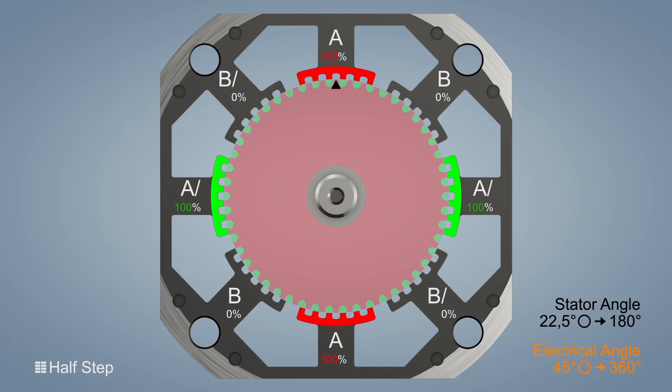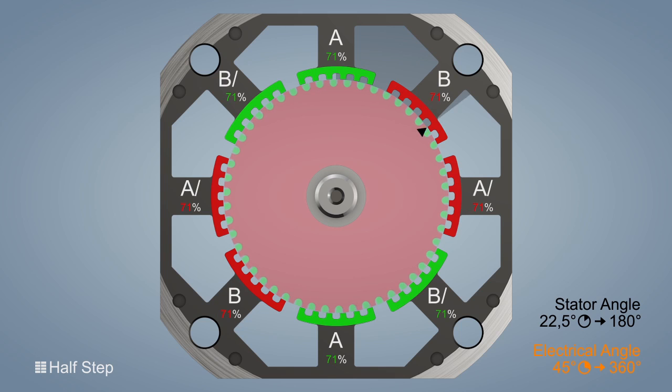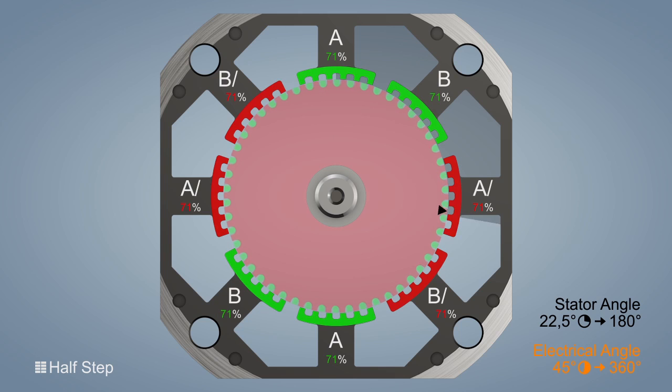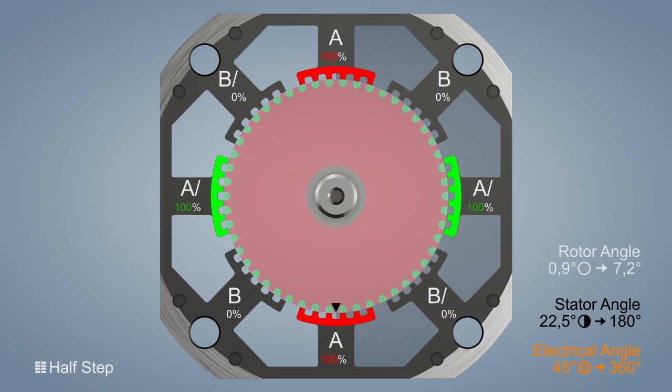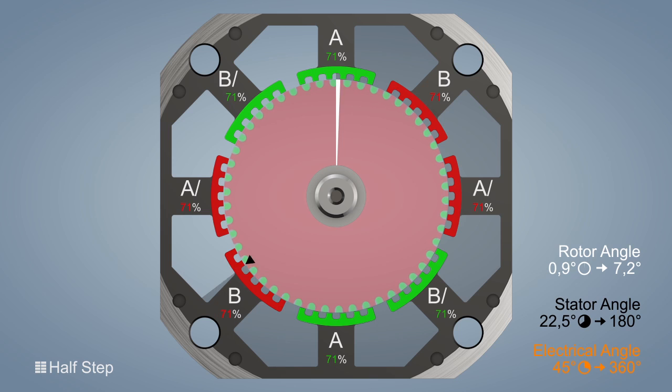The stator field turns clockwise in eight steps from the initial position of 0 degrees through 22.5 to 180 degrees. The rotor turns mechanically in eight steps from the initial position of 0 degrees through 0.9 to 7.2 degrees.